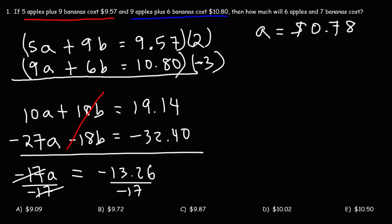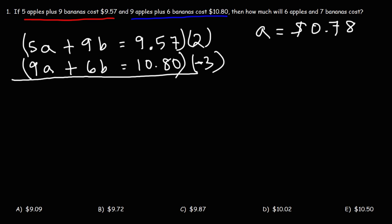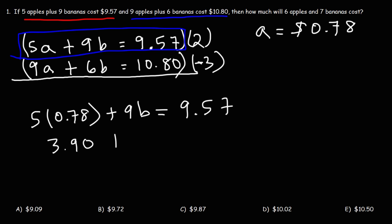So now let's determine the cost of a single banana. So let's use the first equation before we multiply it by two. So let's replace A with 0.78. And let's calculate the value of B. So 5 times 0.78, that's going to be 3.9. Or you could say 3.90.